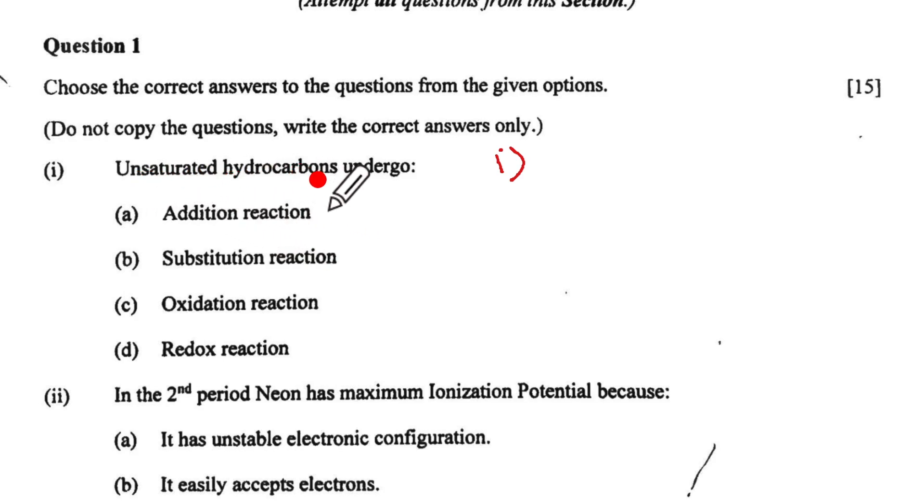Now unsaturated hydrocarbons undergo... Unsaturated hydrocarbons means they are not saturated which means they will have presence of double bond or triple bond, which means they will undergo addition reactions not substitution. So the answer is A and we write addition reaction.